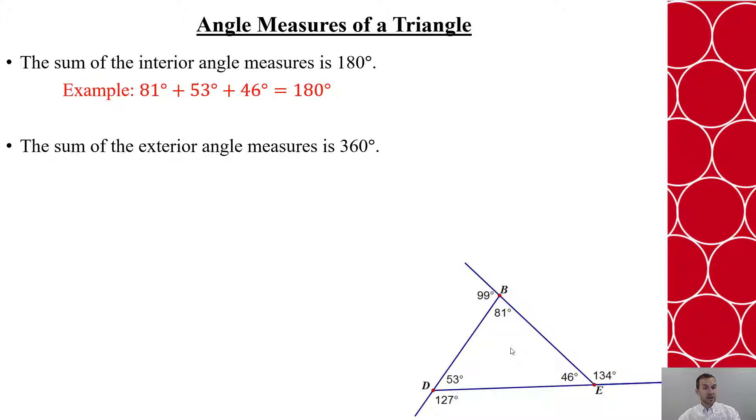Additionally, in Euclidean geometry, the exterior angle measures always sum to 360 degrees. So you can see that we've extended the sides of the triangle, and if I take those three angle measures, and even if I manipulate it B, D, or E to create a different triangle, the three exterior angle measures will always add up to 360 degrees.